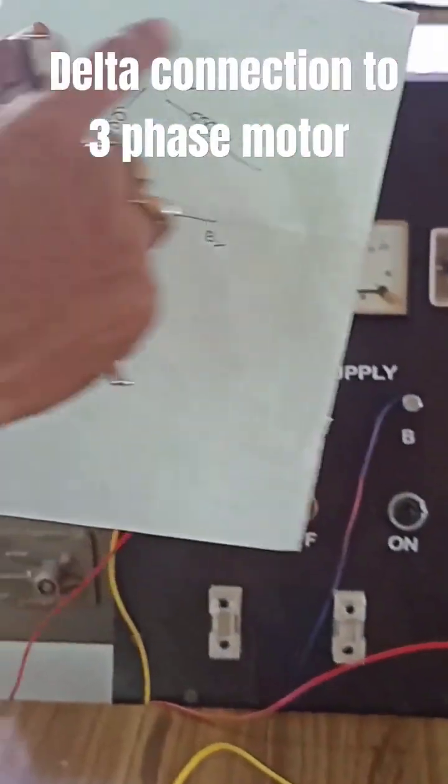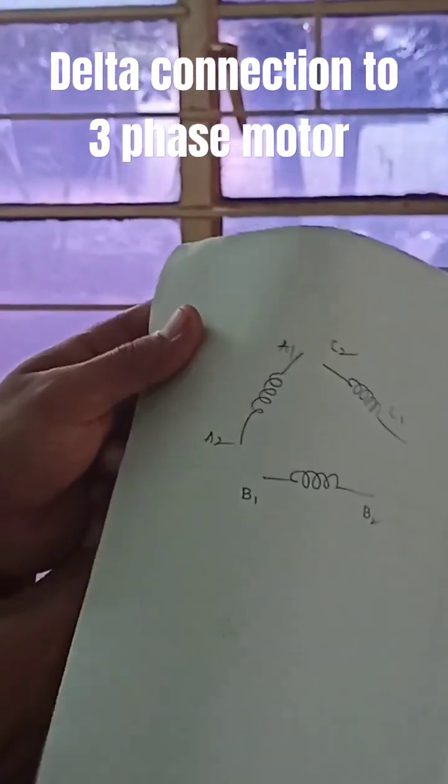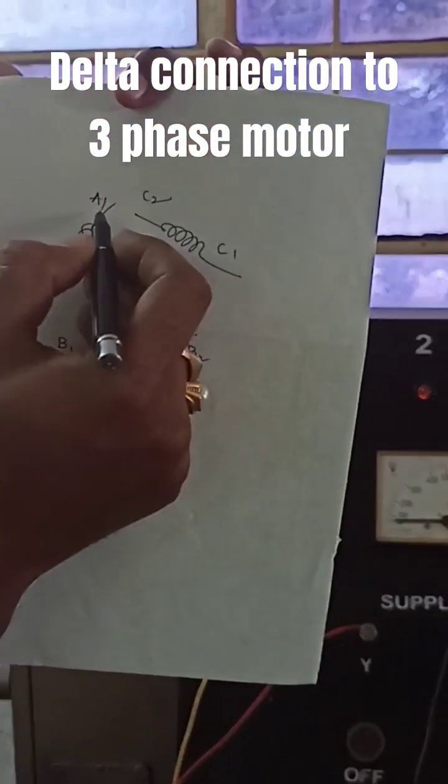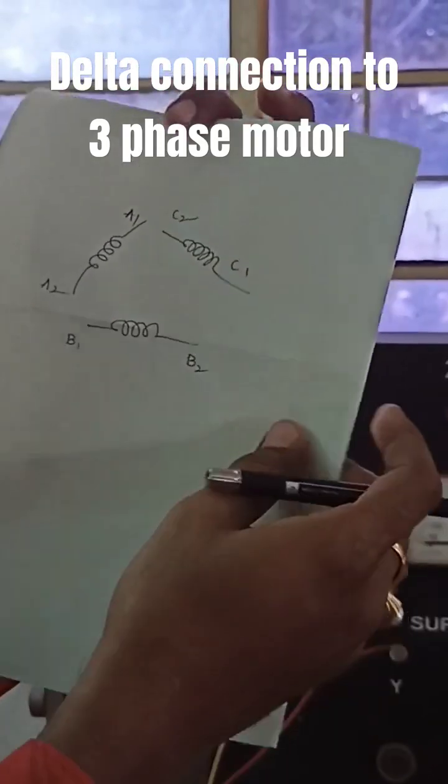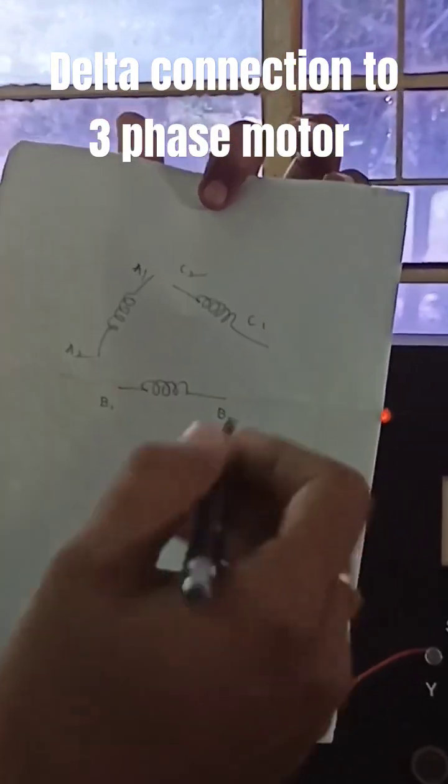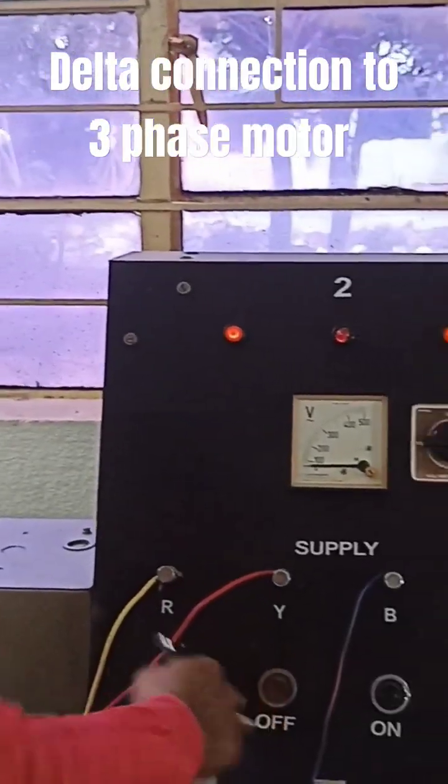In the stator we have three types of winding. We are bringing those terminals as A1, A2 is one set of coil, B1, B2 as another set of coil, and C1, C2 as another set of coil.